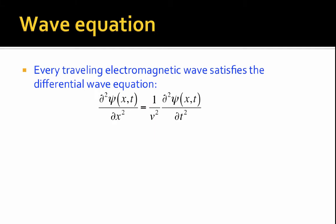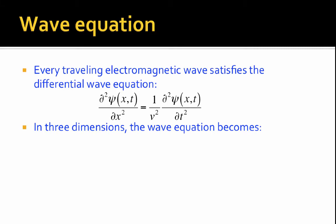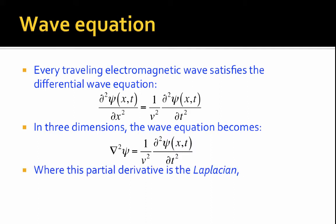A Gaussian beam is an electromagnetic wave, and any electromagnetic wave satisfies the differential wave equation: partial squared psi with respect to x squared equals 1 over v squared times partial squared psi with respect to t squared, where v represents the speed of the wave. In three dimensions, the wave equation looks like del squared psi equals 1 over v squared times partial squared psi with respect to t squared, where del squared is the Laplacian — a sequence of partial derivatives with respect to x, y, and z. So it's a three-dimensional wave equation.